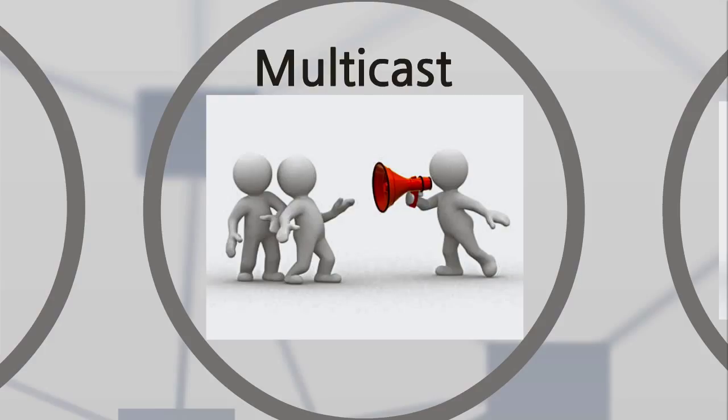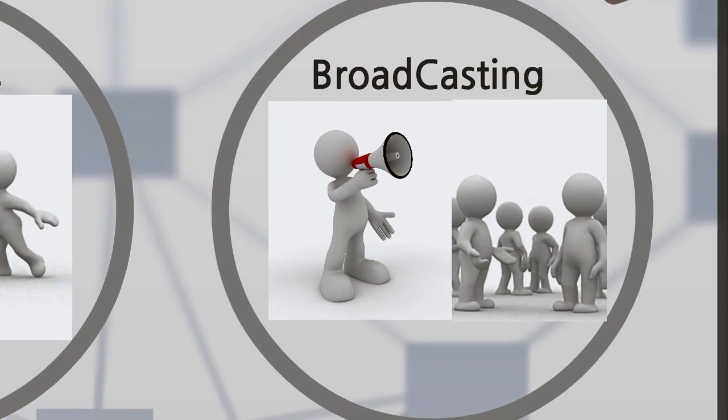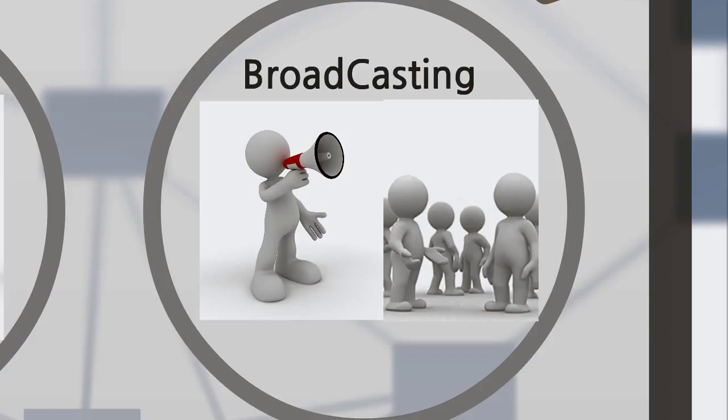They communicate in order to carry out specific instructions. On the other hand, broadcast communication occurs when one person talks to everyone available, as well as one device communicating to all the devices in the network.